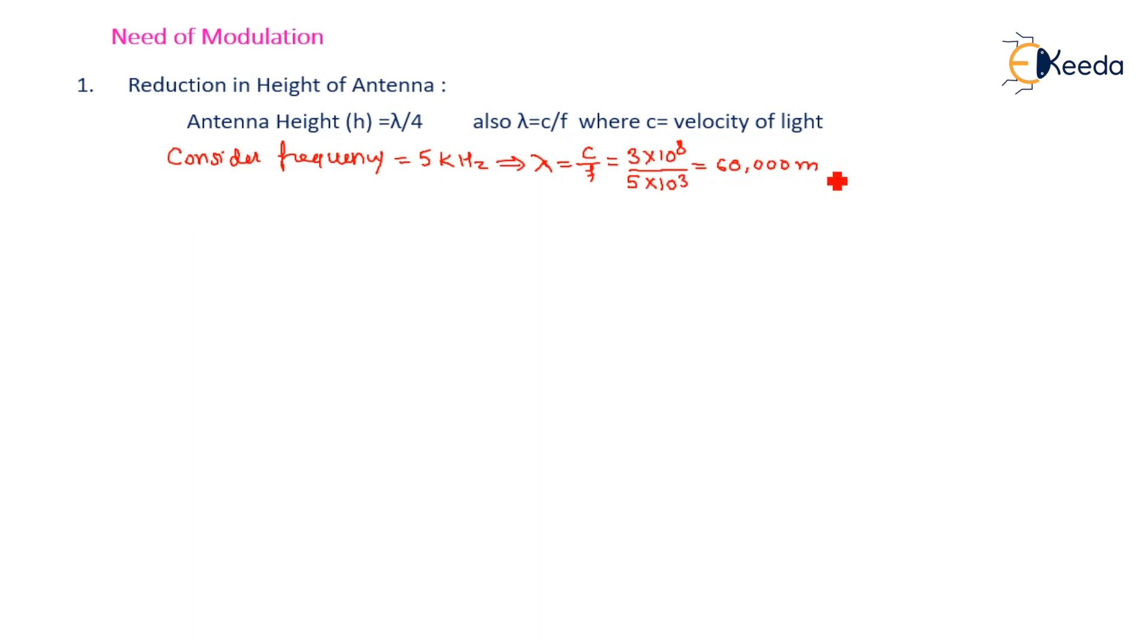According to that, h can be evaluated: h = λ/4. The value of h is 60,000 divided by 4, that is equal to almost 1500 meters.